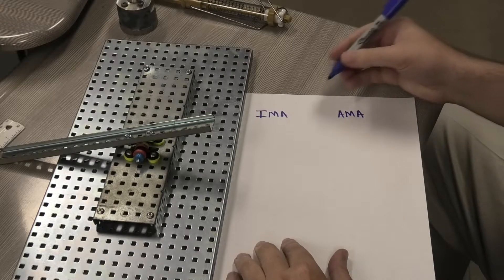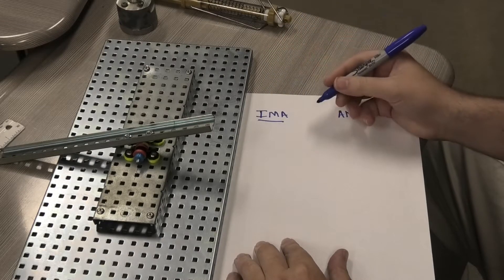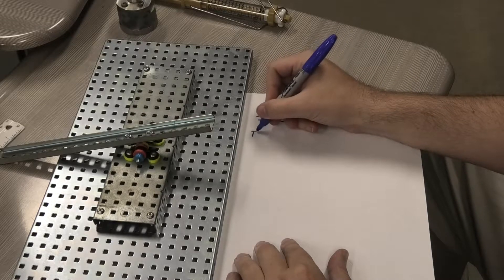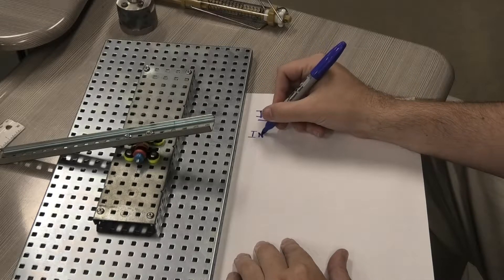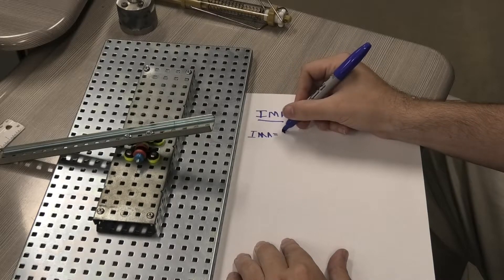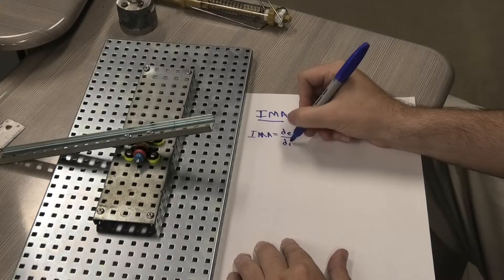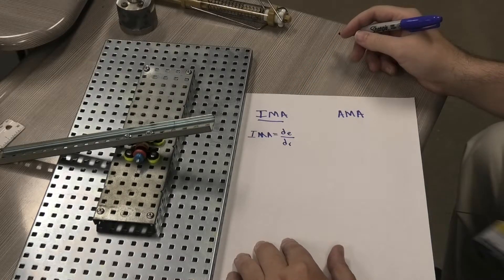By the formula that we had in class, the IMA is going to be IMA = DE/DR. So the ideal mechanical advantage is going to be equal to DE, the effort distance, over DR, the resistance distance.